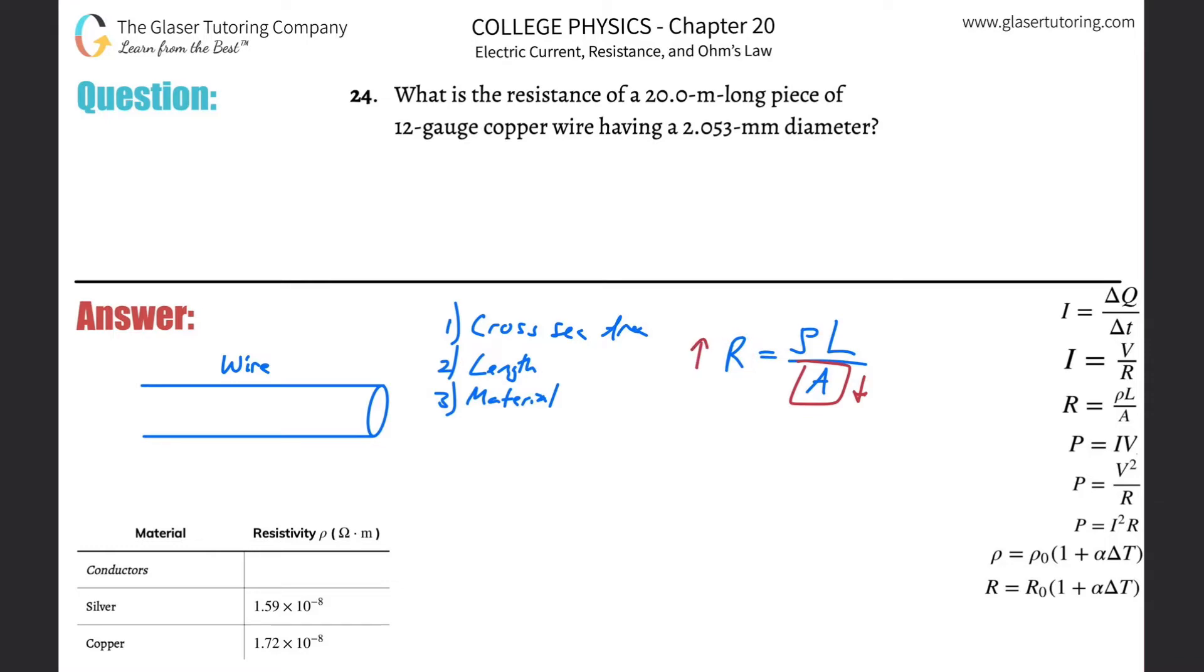That's what we were explaining before. It's an inverse relationship. And then same thing here, the resistivity of the material, this is a direct relationship, so if that goes up then the resistance will also go up.